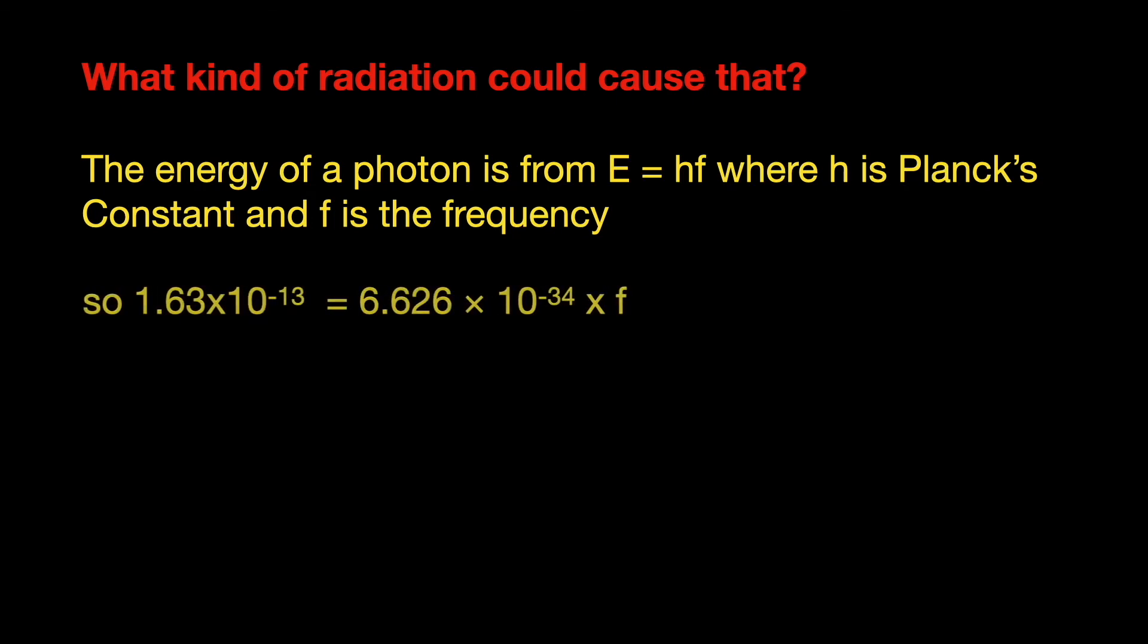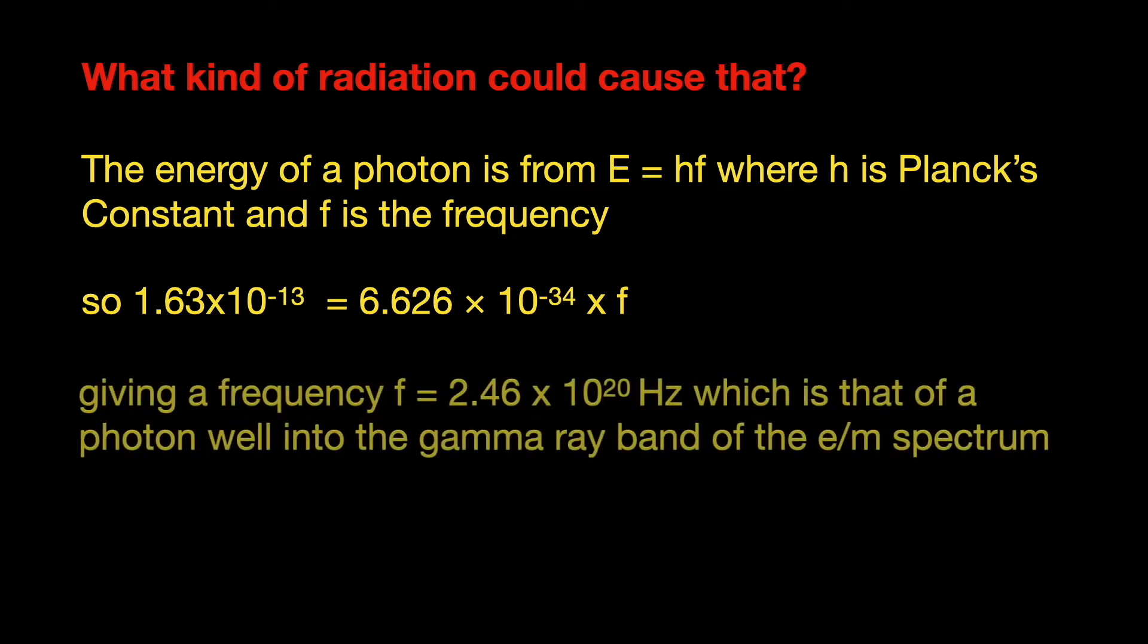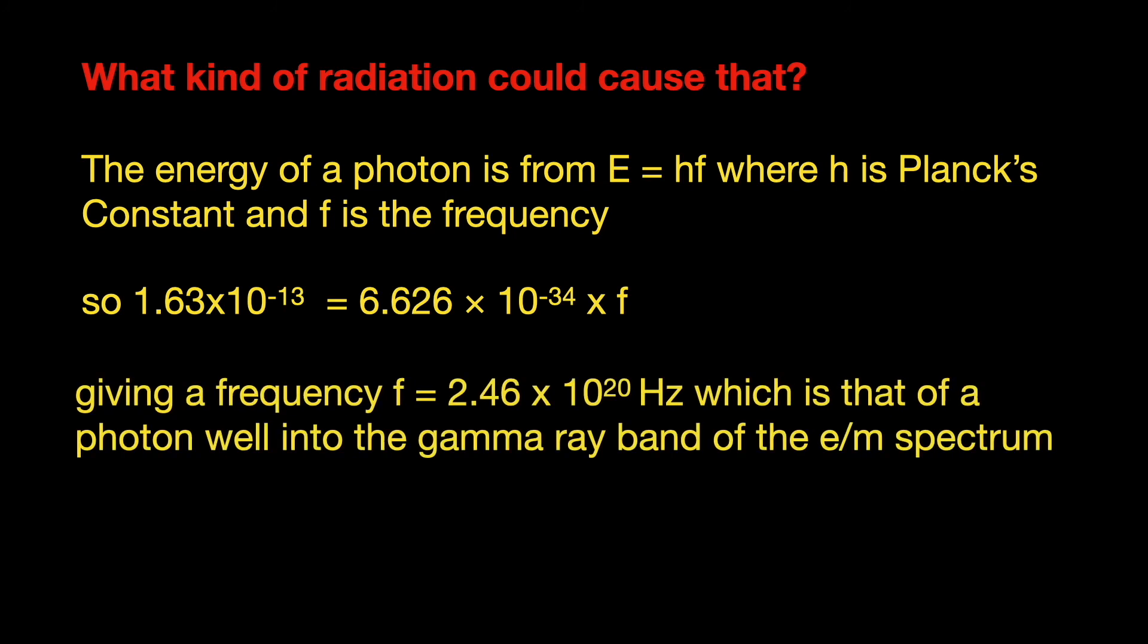So we know the energy and we know Planck's constant. So we have to divide the value of energy by Planck's constant to get the frequency. That gives us a value of frequency 2.46 × 10²⁰ hertz, which is well into the gamma ray band of the spectrum.